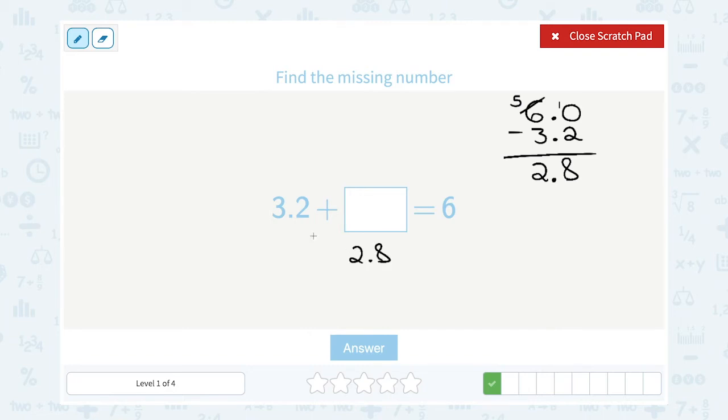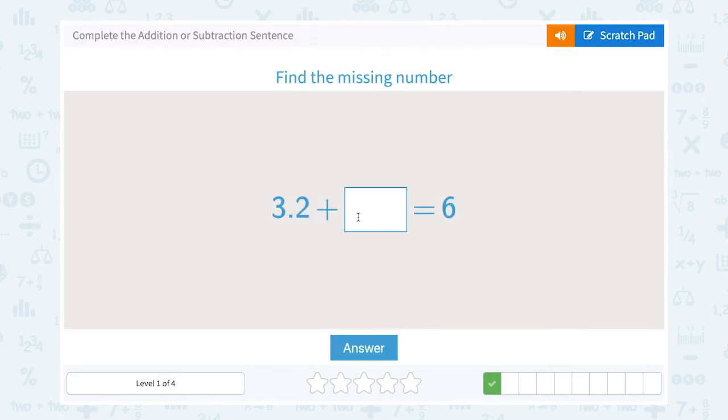Now notice, this should make sense, 2 plus 3 gives us 5. And then 0.2 plus 0.8 gives me a whole other 1, so 5 plus 1 equals 6. So the missing number works out to 2.8.